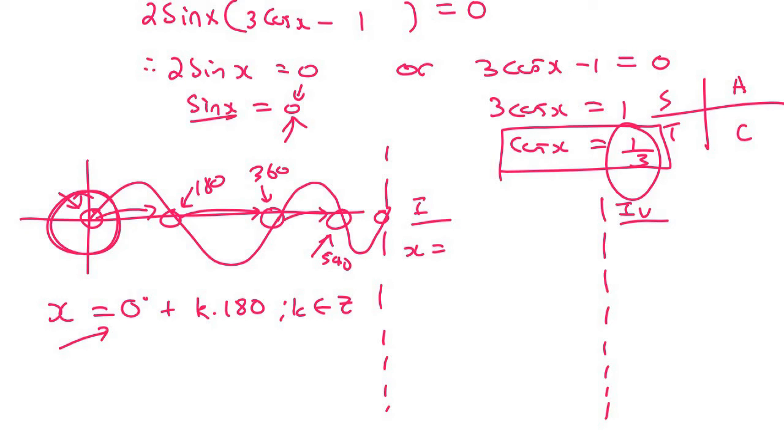So we can say x equals... I need to find my reference angle first. And if we have to go find that reference angle, we would find that it's going to be 70.53 degrees. So for quadrant 1, you just say 70.53 plus k times 360, k as an element of Z.